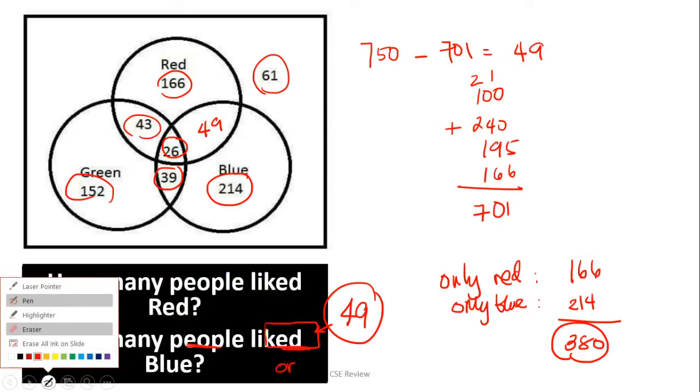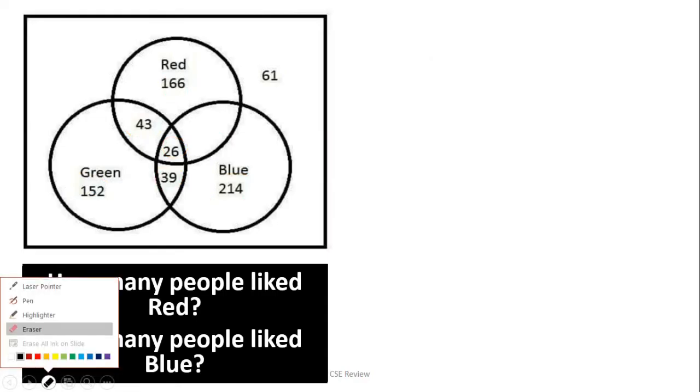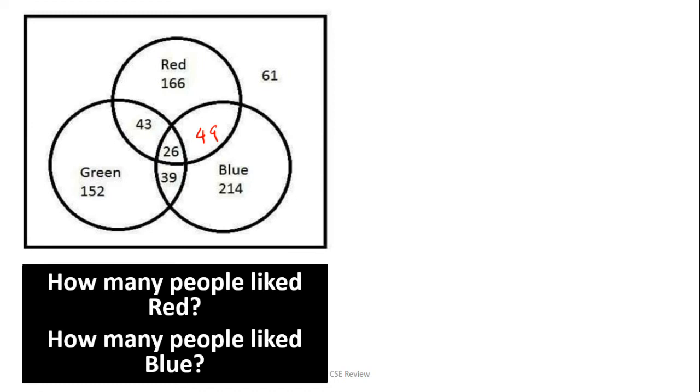This is the other question I posted. How many people like red? How many people like blue? These are two questions. Now, the people who like red means they like red regardless of whether they like other colors or not. We're just looking for how many people like red - total people who like red. Not how many people only like red. Because like I said earlier, if only like red, that's 166. But we're looking for all the people who like red, whether or not they like another color.